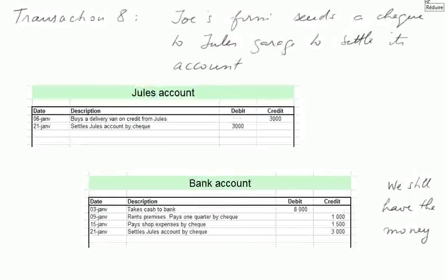Transaction eight. Joe's firm sends a check to Jules Garage to settle its account. Jules' account, which had been credited 3,000 euros as a liability, is now debited 3,000 euros — so Jules' account now has a balance of zero. And the bank account has given out 3,000 euros. We were at 5,500 and are now at 2,500 altogether. We still have money at the bank.